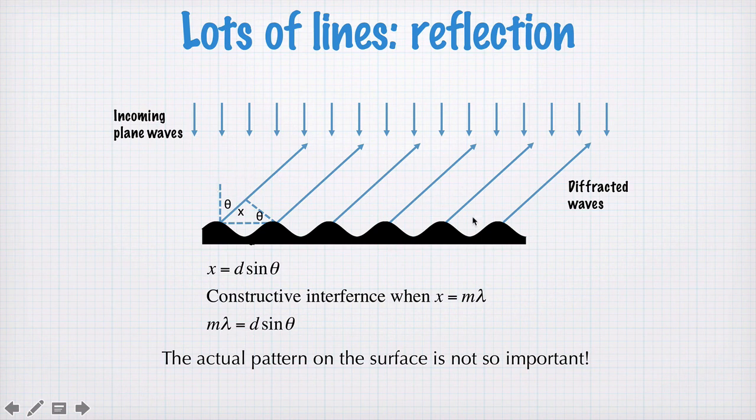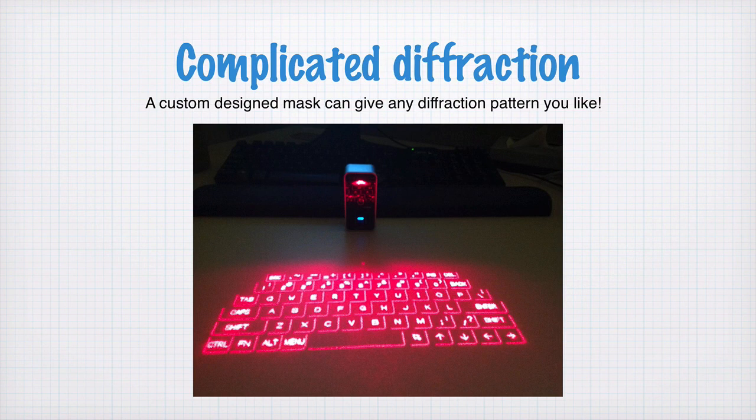A really great example of how complicated diffraction can get is this. This is a virtual keyboard. The way a virtual keyboard works is you have a little box that sits on your desk, you have a laser inside, the laser shines through a diffraction grating, and the diffraction pattern you get from that grating, in this case, makes this image of a keyboard.